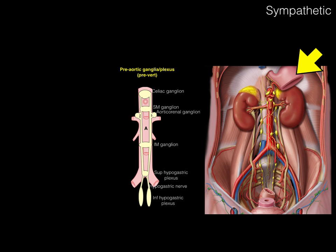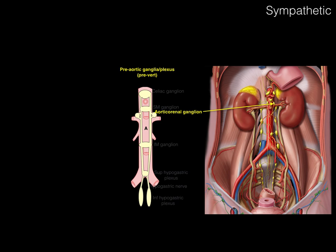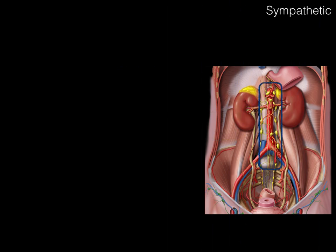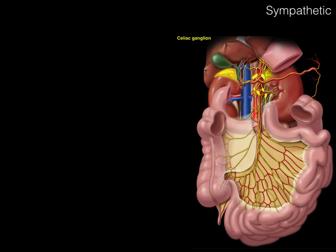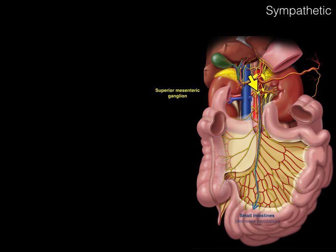Replacing the earlier picture with a more detailed one, we can see the celiac ganglion, superior mesenteric, aortico-renal, and inferior mesenteric ganglia. Focusing on the celiac ganglion: watch the axon course along the artery to the gallbladder to cause relaxation, or out to the stomach to cause vasoconstriction and decreased peristalsis. From the superior mesenteric ganglion, pathways follow arteries to the small intestines to decrease peristalsis. Those nerves simply follow the arteries.